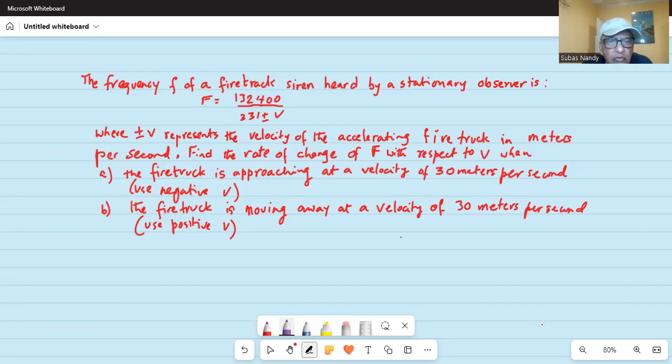The frequency f of a firetruck siren heard by a stationary observer is f equal to 132,400 divided by 331 plus minus v, where plus minus v represents the velocity of the accelerating firetruck in meters per second. Find the rate of change of f with respect to v.